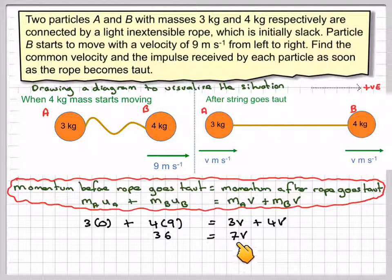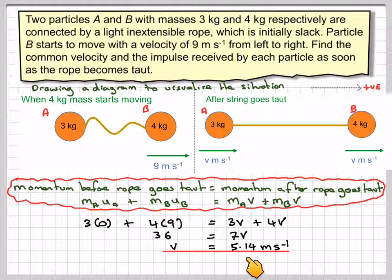So it's going to be 36 is equal to 7V, and therefore V will be equal to 5.14 m per second.